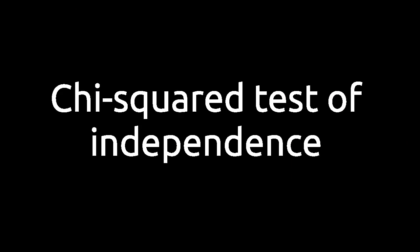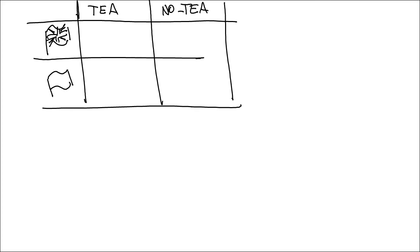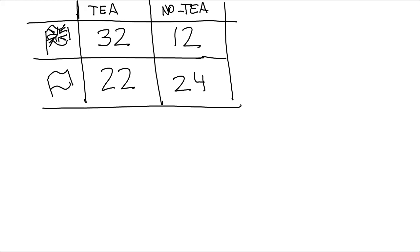There is another type of chi-square test which is particularly useful — the chi-square test for independence. In this test, we want to know if two variables are associated or not. Imagine that you want to know whether being British is associated with drinking tea. You ask the people around you whether they are British and they drink tea, British and they don't drink tea, or they are from overseas and they drink it, and so on. This gives you a table of observed frequencies. If you want to know if there is an association between being British and drinking tea, you need to see if these counts for British and non-British are statistically different.